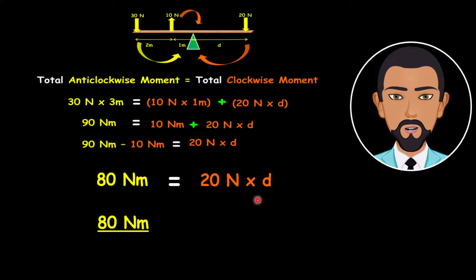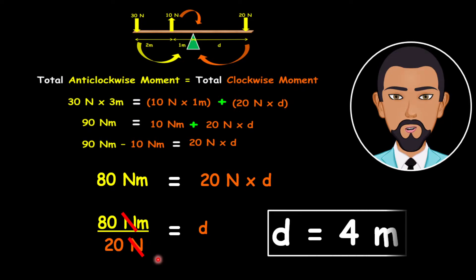So what we'll have here is 80 newton meter divided by 20 newtons, which is equivalent to D. Now what we can do is cancel the newtons. So let's cancel out N. And so what we have left is 80 divided by 20, and so our answer for D is 4 meters.